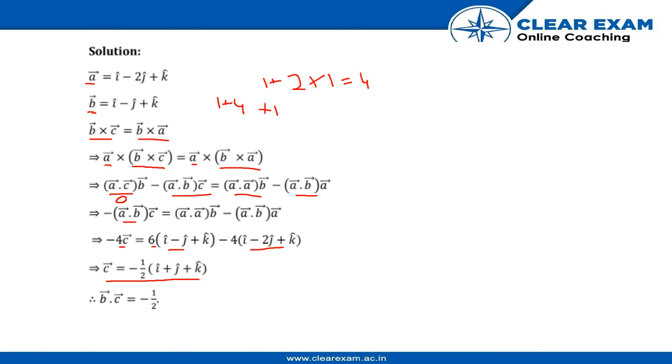Now we have b vector and c vector. We simply compute the dot product of both vectors and get the answer: b dot c equals minus 2.